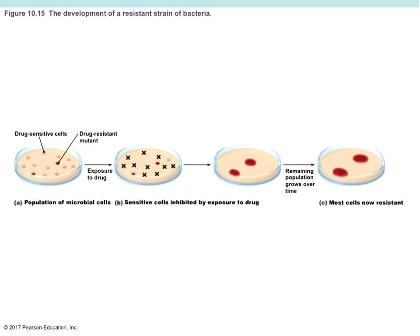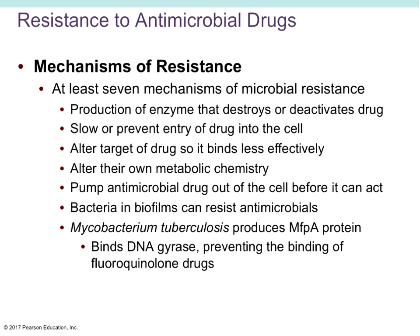In a laboratory setting — and similarly in your body — you start with a population of mostly drug-sensitive cells but some that are naturally resistant. When you expose those cells to the drug, you kill everything that's sensitive. The few resistant cells are not affected and continue to grow, so the remaining population consists mostly of cells that are resistant to the drug.